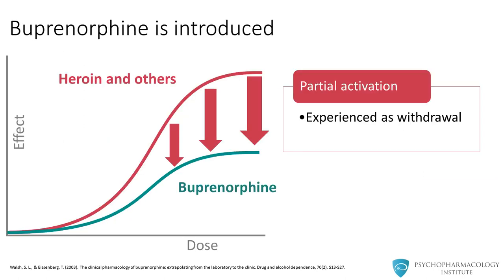If heroin is already on the receptor and buprenorphine is then introduced, because buprenorphine has a high affinity for the receptor, it will displace the heroin. Once this happens, the displacement causes a sudden drop in receptor activation — going from full activation to partial activation. This sudden drop in activation is experienced as withdrawal. This means the introduction of buprenorphine while heroin or other opioids are already on the receptors will cause an antagonist effect.